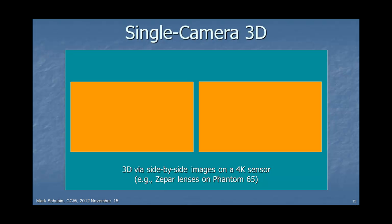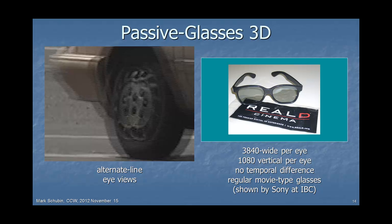Another reason is single-camera 3D. Take a Z-PAR lens system, put it on a Phantom 65 with side-by-side lenses on a single 4K sensor, and you get HD in 3D. Or for the display end, there's passive glasses 3D. With an alternate-line system where one scanning line is a left-eye view and one is a right-eye view, you can use simple passive glasses — no batteries. If you have 3840 across, both eyes get 3840, and with a 4K system you get 1080 vertical per eye. There's no temporal difference between the eyes, so you don't have lip sync problems. Sony showed this at IBC — very simple, very good-looking 3D.